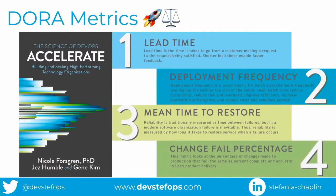And finally: change failure rate. Elite performers are at zero to 15% — meaning I make a change and it's good. Rather than failing and having to do a rollback or a patch. It's really important to look at all four of these metrics together.